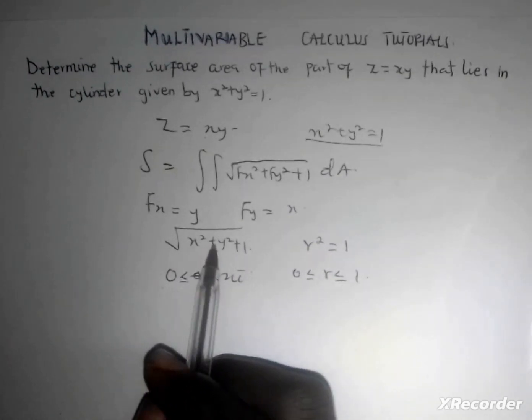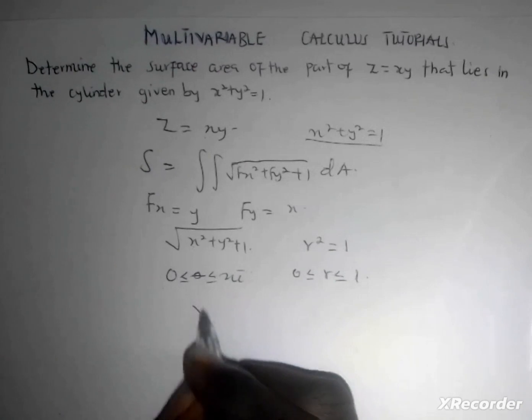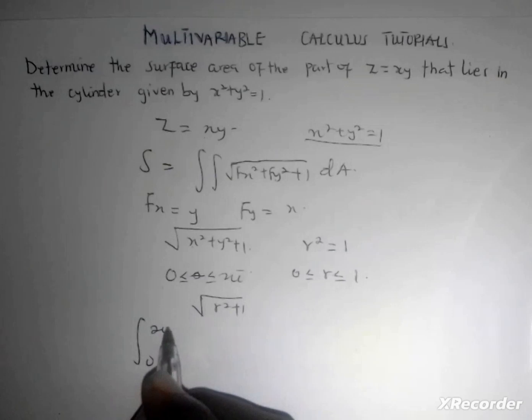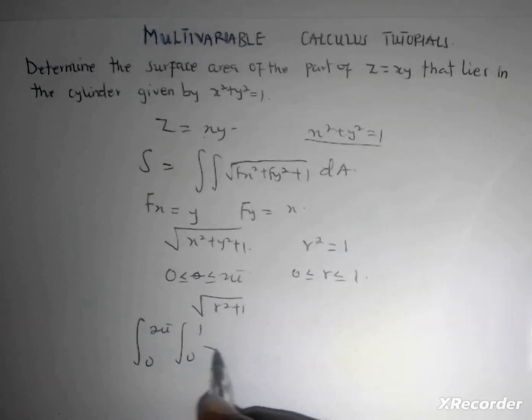To convert this to polar coordinates, you know x² + y² = r², so I'll have square root of r² + 1. I'll have the double integral from 0 to 2π and 0 to 1 of √(r² + 1) r dr dθ.